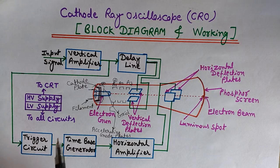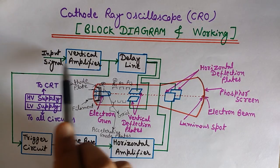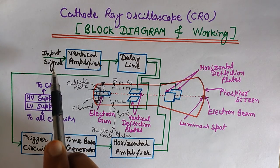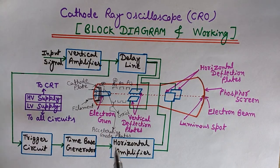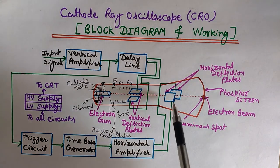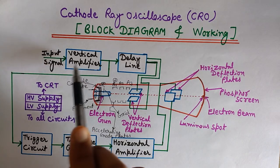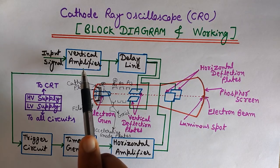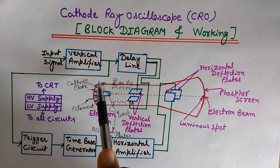Now we will see the purpose of all the blocks. The input signal to be observed is applied on the vertical amplifier. The vertical amplifier's job is to raise the voltage to a level which is enough to deflect the electron beam — to the required level for the vertical deflection plate system.